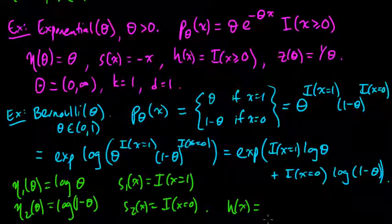eta 1 of theta is log of theta, eta 2 of theta is log 1 minus theta. S1 of x is the indicator that x equals 1, s2 of x is indicator x equals 0. And z is 1, h of x is 1.